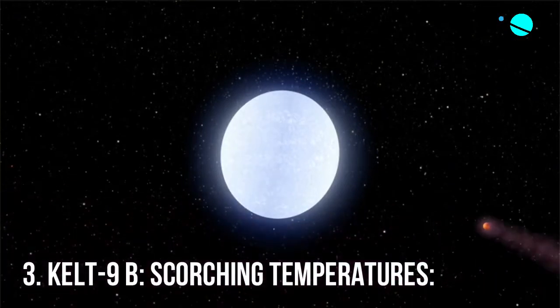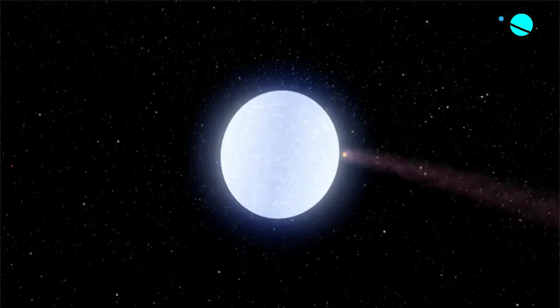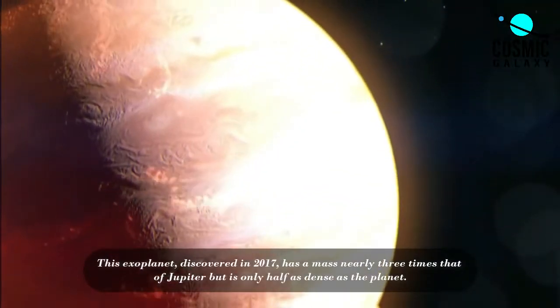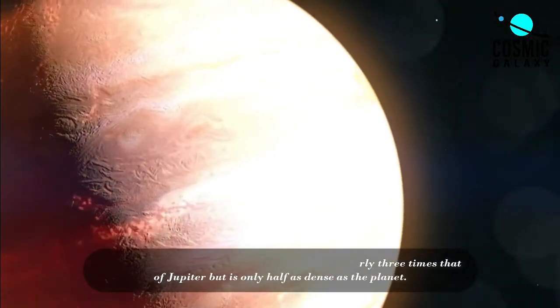Number 3, KELT-9b, Scorching Temperatures. This exoplanet discovered in 2017 has a mass nearly three times that of Jupiter but is only half as dense as the planet.